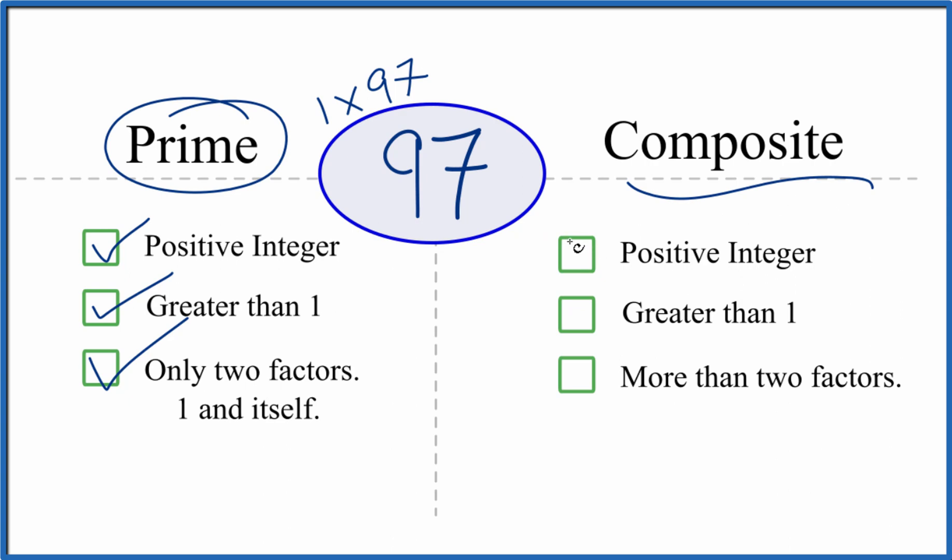But is it a composite number? We have a positive integer that's greater than 1, and there are only two factors - so there's not more than two factors. So 97 is not a composite number. In answer to our question, 97 is a prime number.